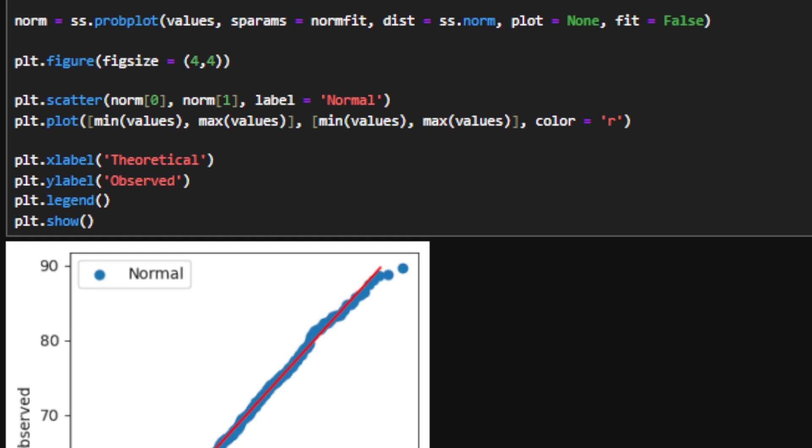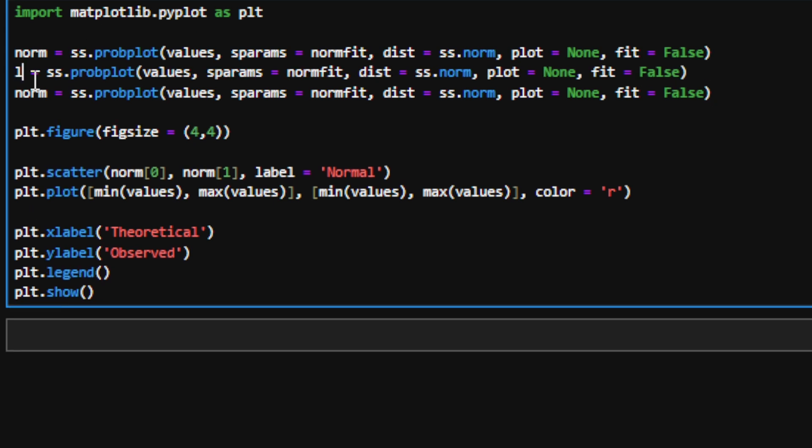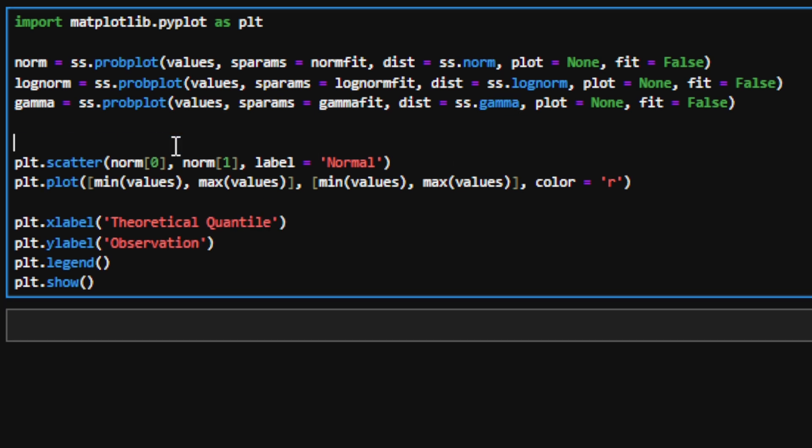Now, having said that, as we just discussed, you may be considering other distributions. To add them, I'll do it in just four simple steps. First, I'll create two more arrays where we are storing the empirical versus theoretical quantiles for the log normal and gamma distributions.